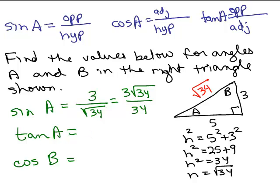How about the tangent of A? Looking at angle A, tangent is the opposite over the adjacent. The opposite side is 3, and the adjacent side — talking about the legs — is 5. So the tangent of A equals 3 over 5, or 3 fifths.